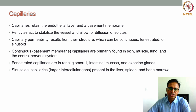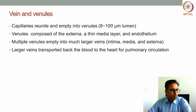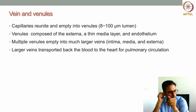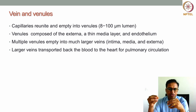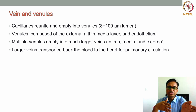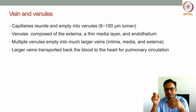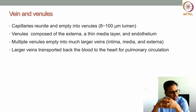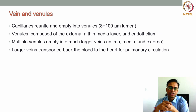Moving to the venous side: from the tissue bed, capillaries reunite to form venules, which have a typical lumen diameter of 8 to 800 microns. Venules carry blood after the capillaries and all three layers — externa, a thin media layer, and endothelium — are present. Multiple venules empty into larger veins, which also contain all three tunica layers.